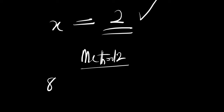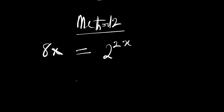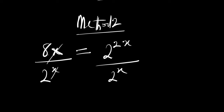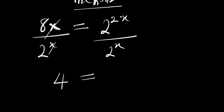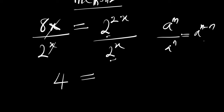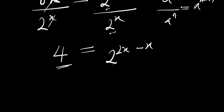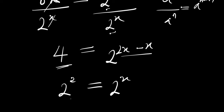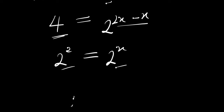In method 2, remember the problem: 8^x equals 2^(2x). We simply divide each part of this equation by 2^x. The 2^x cancels with 8^x leaving 4, and on the right using the division rule a^m divided by a^n equals a^(m−n), we get 2^(2x−x) which is 2^x. Now making the bases the same: 4 equals 2^2 equals 2^x, so comparing exponents x equals 2.